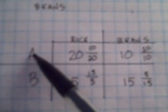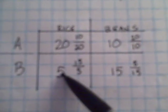A really handy trick is to make a table where you put the countries on top of each other and the two goods that they make side by side. So country A can either make 20 bushels of rice and 10 of beans, and as you saw on the PPF, country B can make 5 or 15.